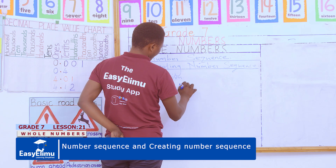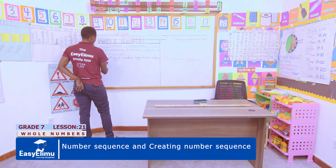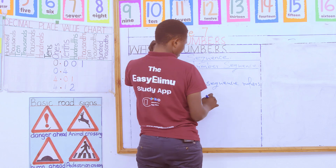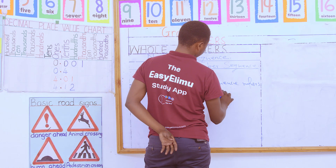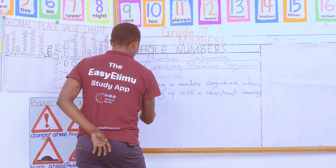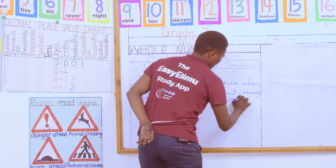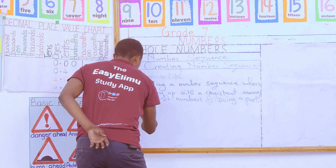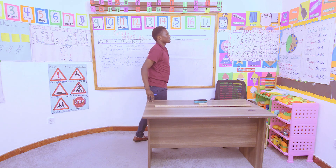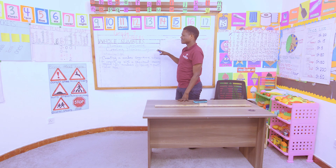Creating a number sequence refers to coming up with a consistent arrangement of numbers following a particular rule. So if you are able to do that, then whatever you come up with is what we call a number sequence.